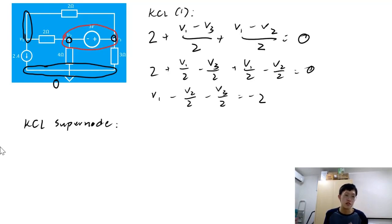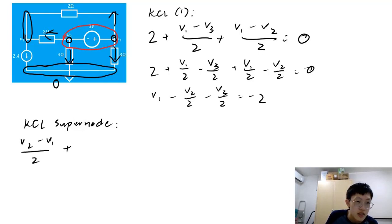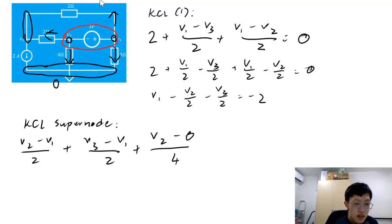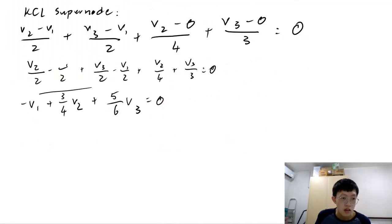Currents entering the node equal the currents leaving the node. Since we don't know the branch current directions, we assume they all move out. Looking at these currents, we have V2 minus V1 over 2, plus V2 minus 0 over 3 ohms, equals the currents entering the node, which is zero. Simplifying, we get this equation.